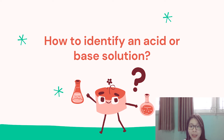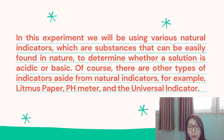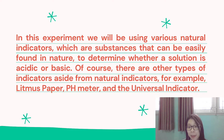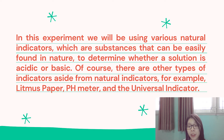How to identify an acid or base solution? In this experiment, we will be using various natural indicators, which are substances that can be easily found in nature, to determine whether a solution is acidic or basic. There are other types of indicators as well aside from natural indicators — for example, litmus paper, pH meter, and a universal indicator.